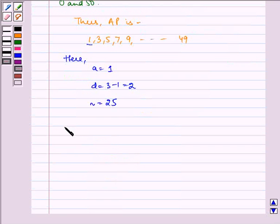Now, let us find the sum. S N is equal to N by 2 multiplied by 2A plus N minus 1 D, and we have to find S 25.